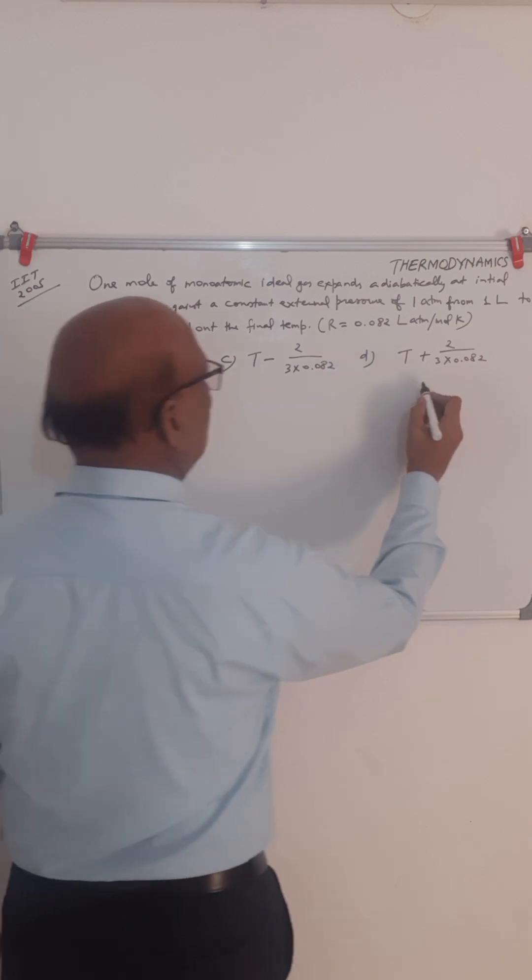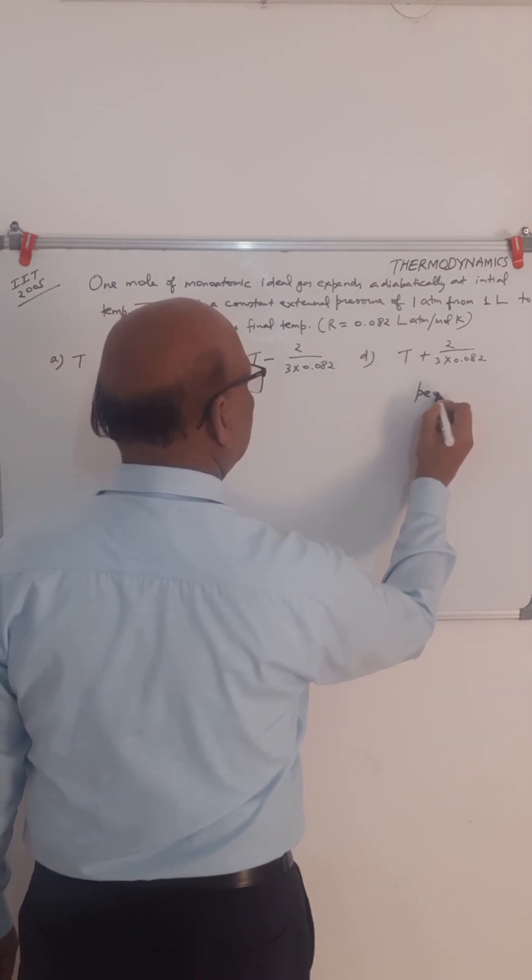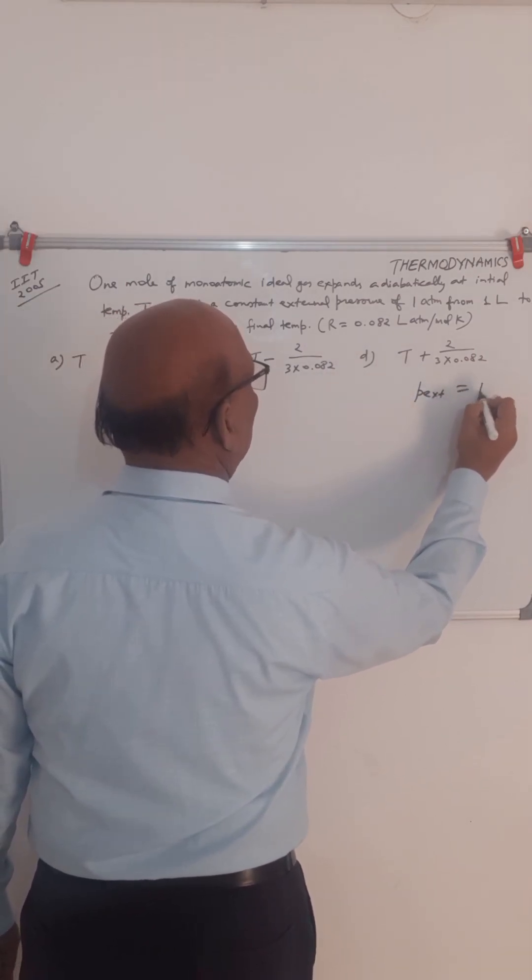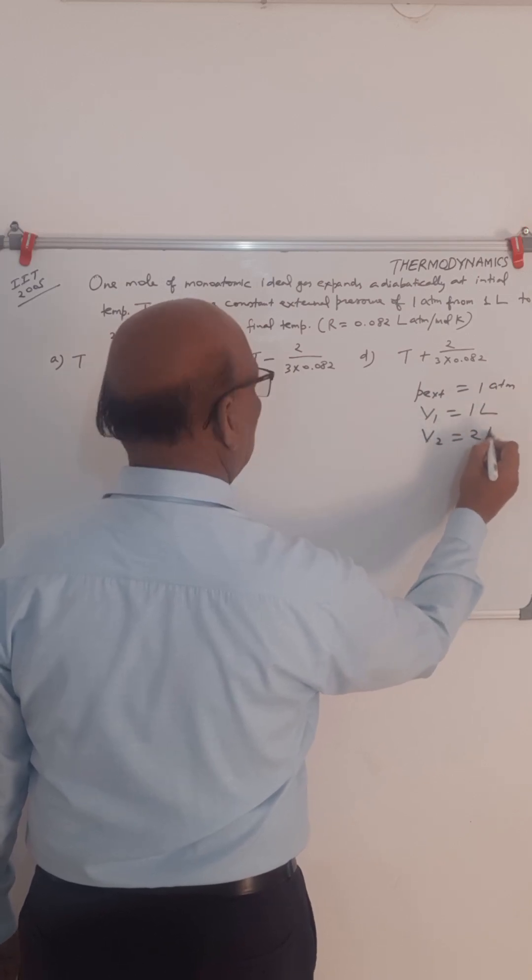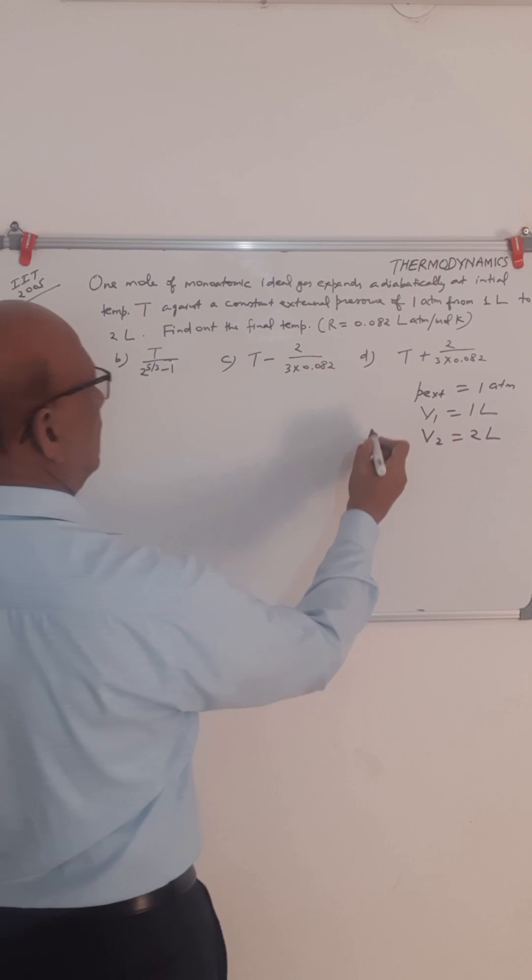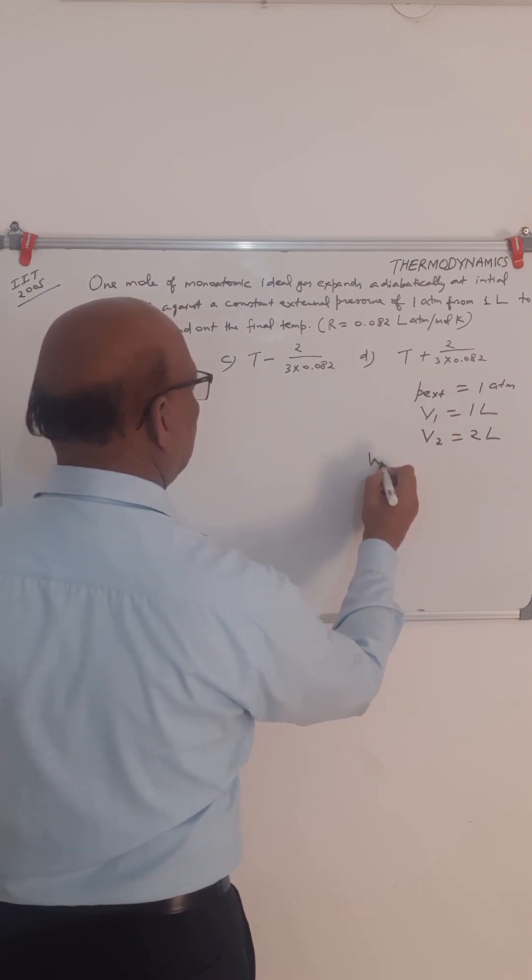So what have been given to us is P external is given to us as 1 atmosphere, then initial volume V1 is 1 liter, final volume V2 is 2 liters.